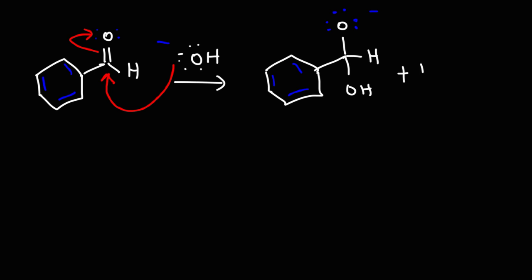we're going to react that intermediate with another benzaldehyde molecule. So we're going to use a lone pair from this oxygen. It's going to reform the pi-bond. And in the process, it's going to expel a hydride ion, which will attack the carbonyl group of the other aldehyde molecule.